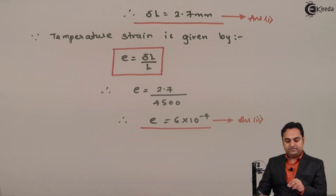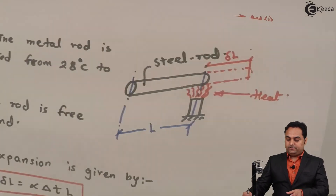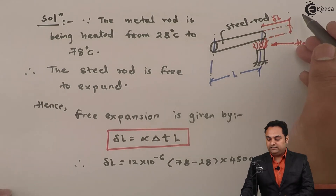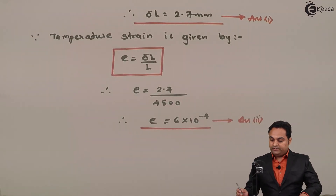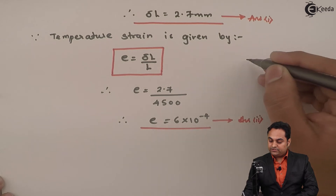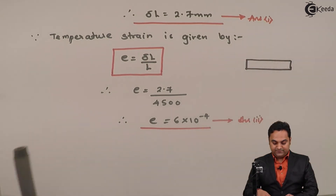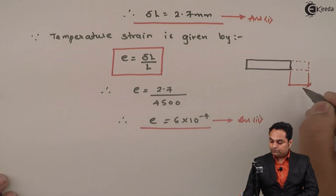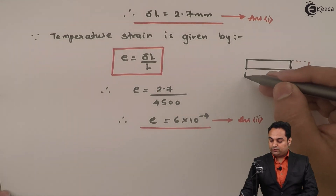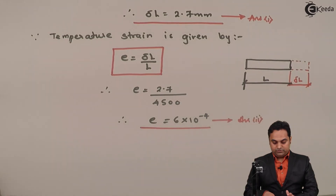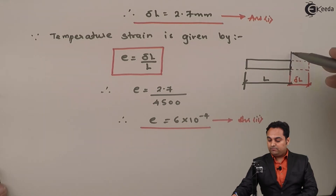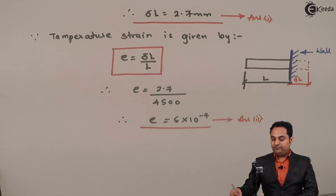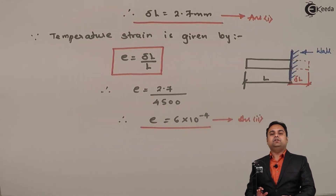Next, we have to calculate the thermal stress. If we are stopping the free expansion delta L by having a wall, the rod expands freely but a wall prevents this expansion. The original length was L, and after heating it would expand freely. When a wall is present, the free expansion is prevented.